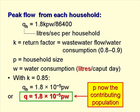P is the household size, W is the water consumption in litres per person per day. Using the value of 0.85 for K, we have the expression QH equals 1.8 times 10 to the minus 5 times PW. Or if we wish, we can express Q in terms of P, where P is the contributing population, so Q equals 1.8 times 10 to the minus 5 times PW.